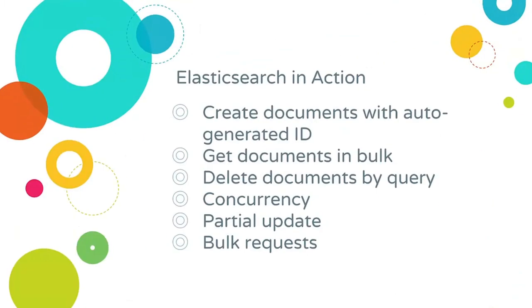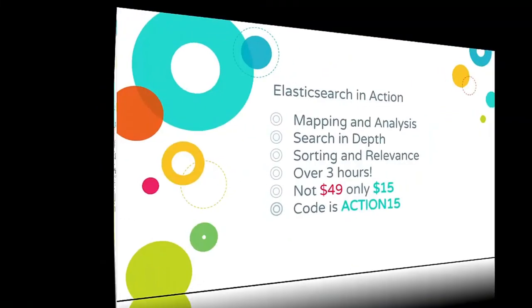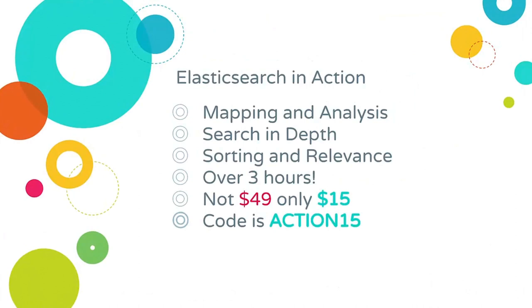Topics we didn't cover in our CRUD operations chapter include: creating documents with auto-generated IDs, getting documents in bulk, deleting documents by query, concurrency in Elasticsearch for multiple parties working on the same documents, partial update of documents for better performance, and bulk requests for a performance lift across all CRUD operations. There are also entire chapters dedicated to mapping and analysis, search in depth, and sorting and relevance. The Elasticsearch in Action course is currently $49, but with coupon code ACTION15 you pay only $15.